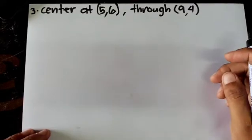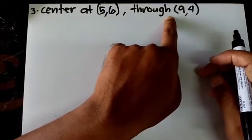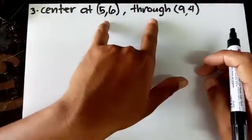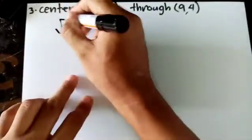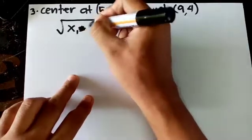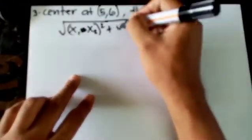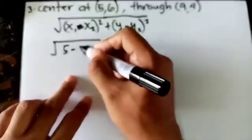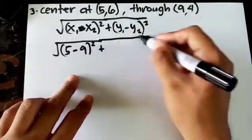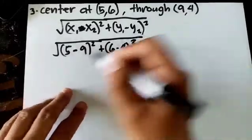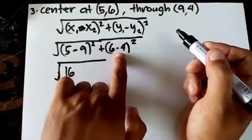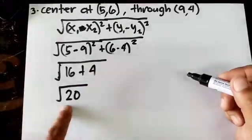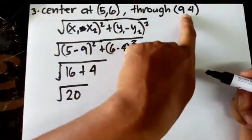Number 3: center at (5,6), and the point (9,4) is on the circle. Since the center to any point on the circle is the radius, use the distance formula: r = √[(x₁-x₂)² + (y₁-y₂)²]. Substituting: r = √[(5-9)² + (6-4)²] = √[(-4)² + 2²] = √[16+4] = √20. So the radius is √20.